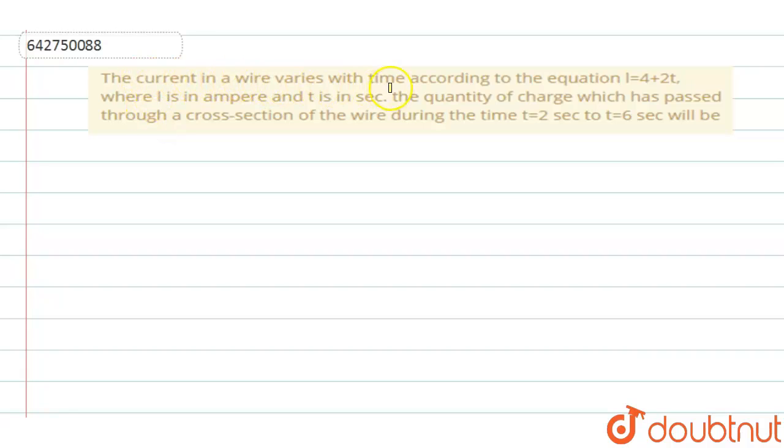The current in a wire varies with time according to the equation i = 4 + 2t, where i is in ampere and t is in seconds. The quantity of charge which has passed through the cross section of the wire during the time t = 2 seconds to t = 6 seconds will be...